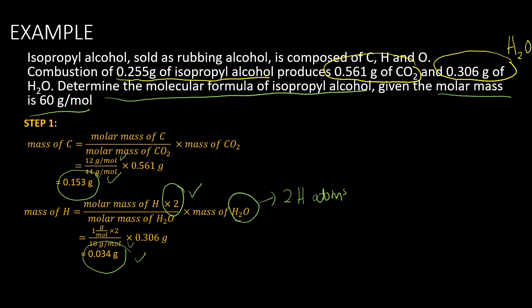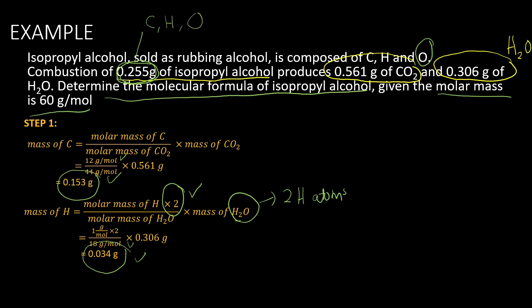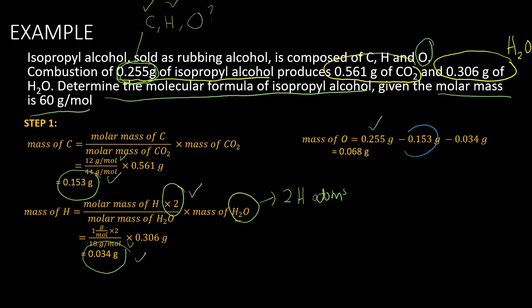Isopropyl alcohol consists of 3 elements. We have found the mass of carbon and the mass of hydrogen. Now we want to find the mass of oxygen. We use the total mass of isopropyl alcohol, 0.255 grams, minus the mass of carbon and minus the mass of hydrogen. This gives us the mass of the third element — in this question, the mass of oxygen.